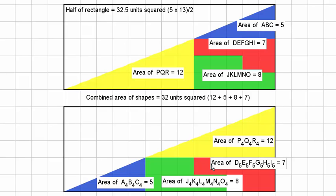Therefore, the combined area of all four colored shapes will always be 32 units squared. However, the area of half the 5 by 13 rectangle is 32.5 units squared, which is 0.5 larger than our combined shapes.